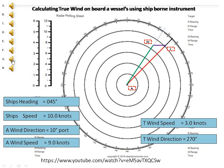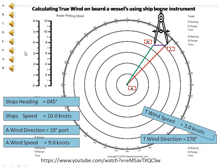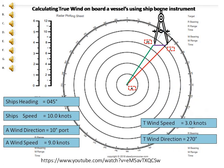Step 7: Measure the line from M to R using a divider — the result is your true wind speed. Then transfer the M-to-R line to the center E and extend it to the edge of the plotting chart. The answer is your true wind heading.